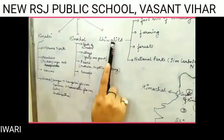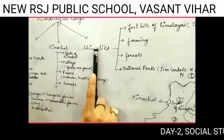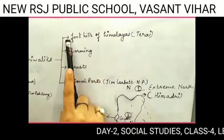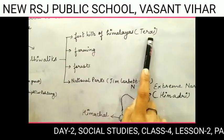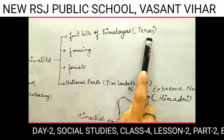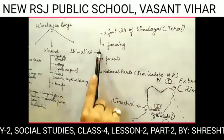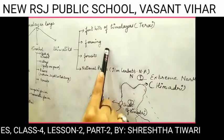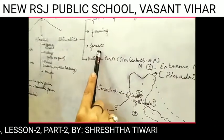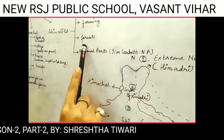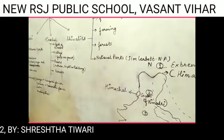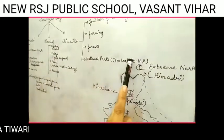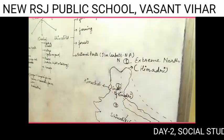The third range is Shivaliks, called the foothills of the Himalaya, known as Terai. Farming is the main occupation in that area. Forests are also found there. One famous national park is found here — Jim Corbett National Park.